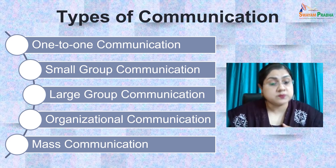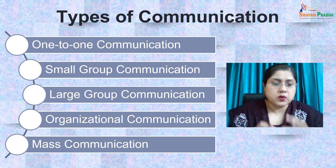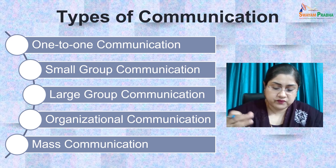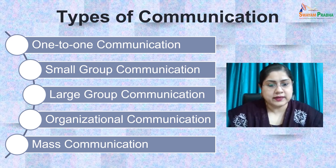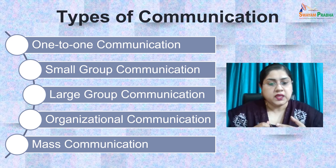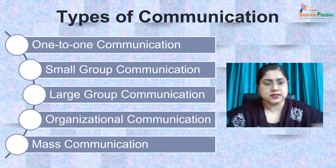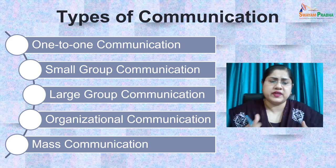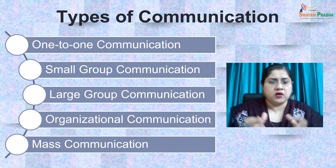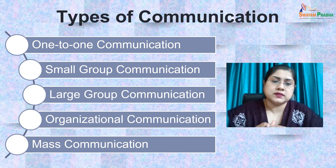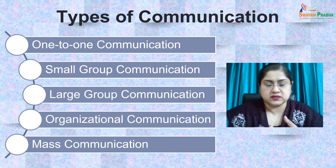The next type is small group communication. Small group communication occurs in both formal and informal ways among members of a small group consisting of more than two individuals. For example, a father talking to two of his children, or a mother talking to two of her sisters. Or a grandfather talking to four or five children of the family — that can also be considered small group communication.